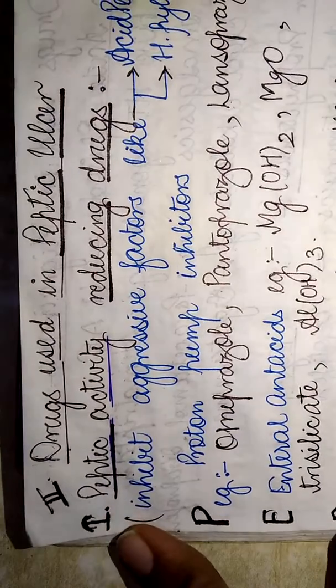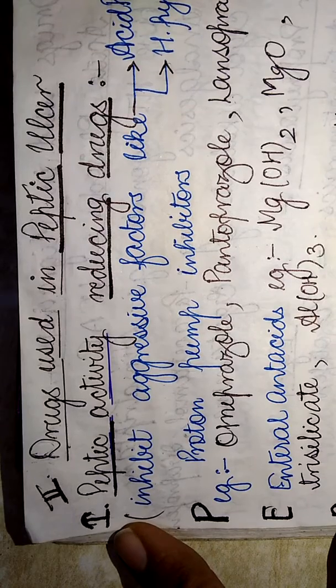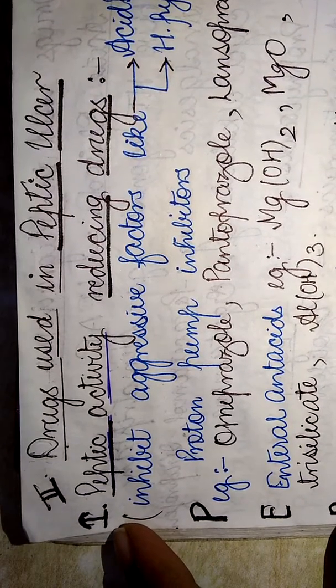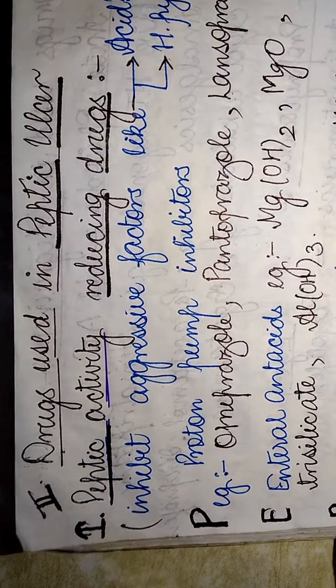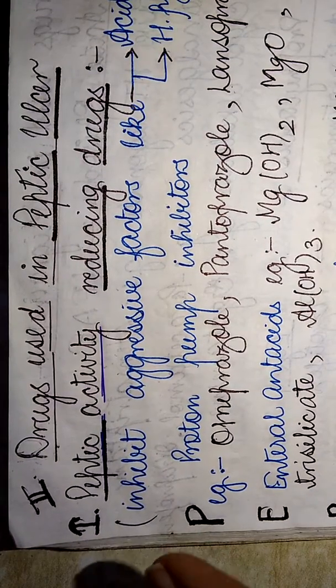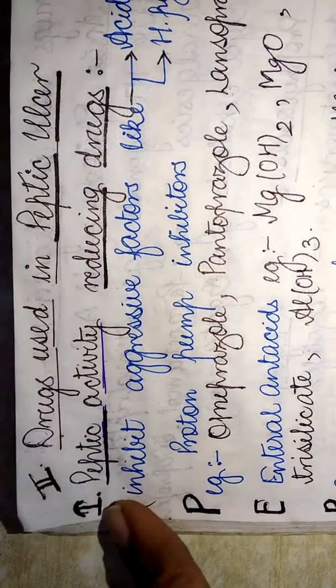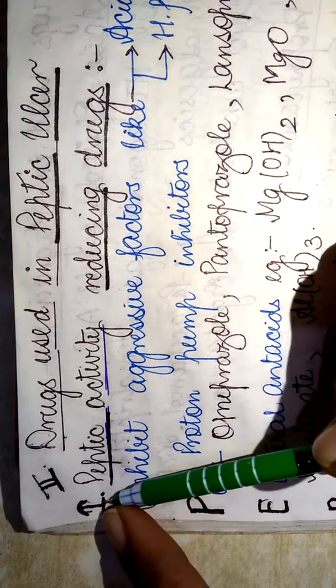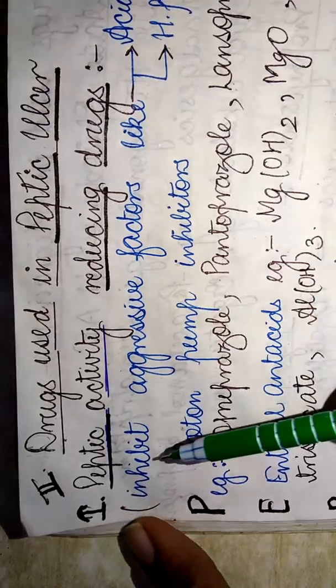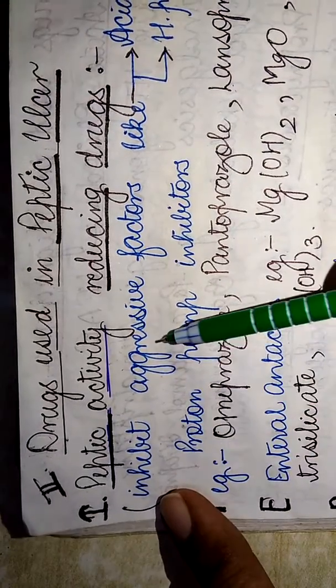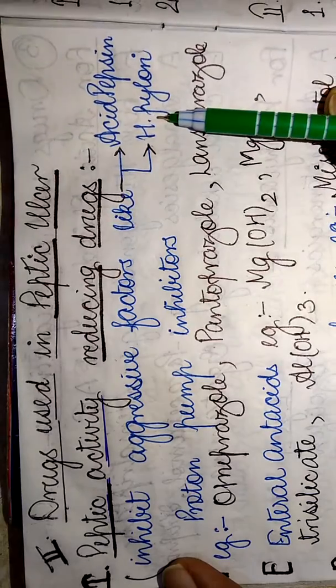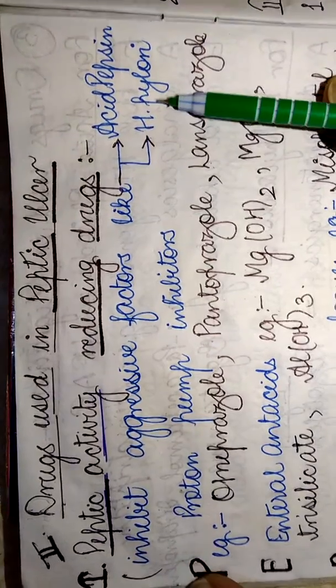Hello viewers, today I'll be discussing the drugs which are widely used in the treatment of peptic ulcer. The drugs used for the treatment of peptic ulcer basically comprise two broad categories, including the peptic activity reducing drugs that inhibit the aggressive factors like acid, pepsin, and Helicobacter pylori.